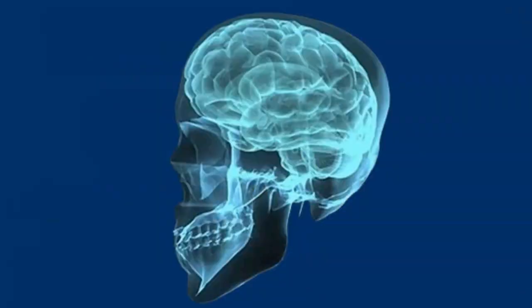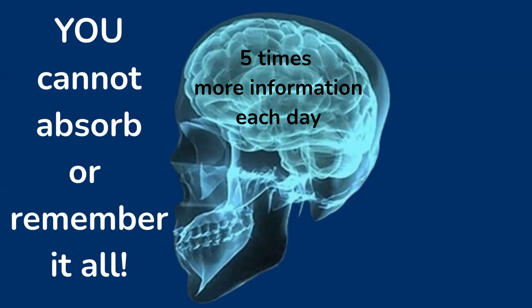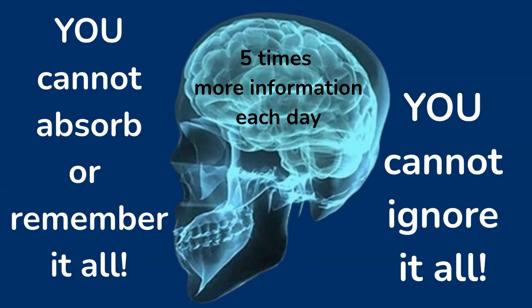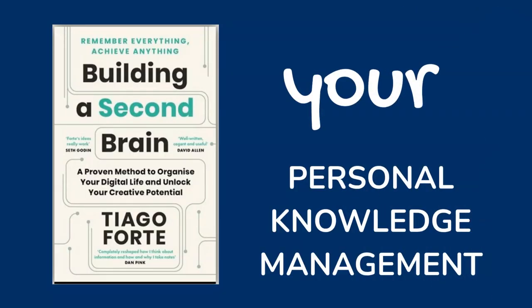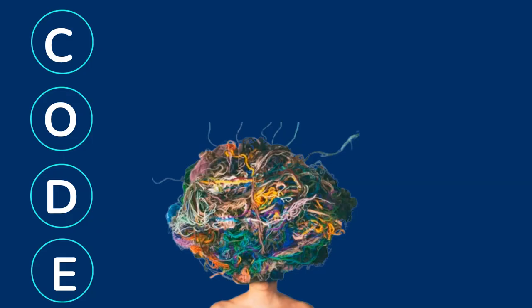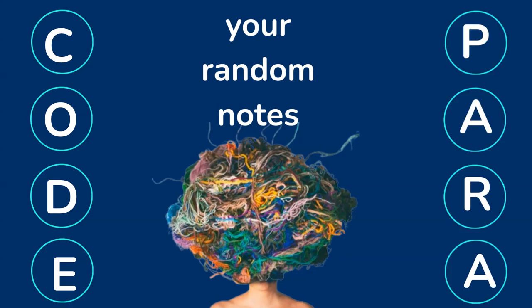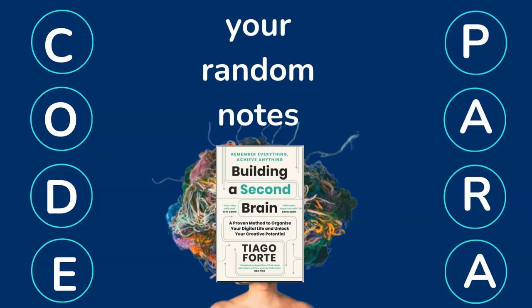We are now consuming five times more information each day compared to the 80s. You cannot absorb or remember it all. You also cannot ignore it all. Instead, you need to develop what the author calls your personal knowledge management system — a second brain — to help organize your digital information. You will discover the CODE method, which turns random notes into actionable insights, and learn how to use the PARA system to organize your life with minimal effort.